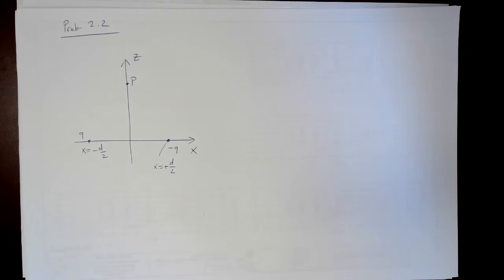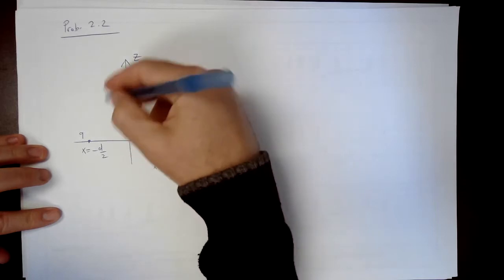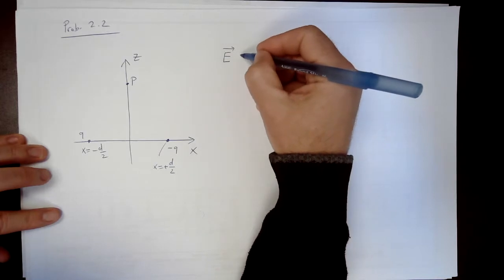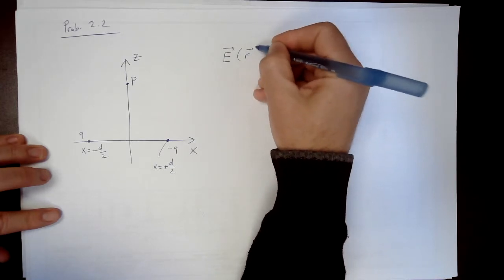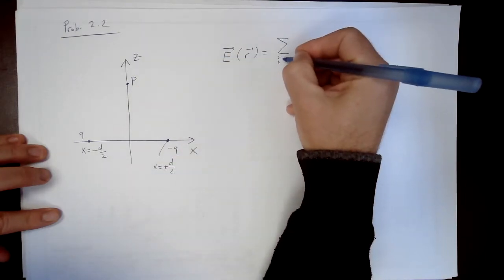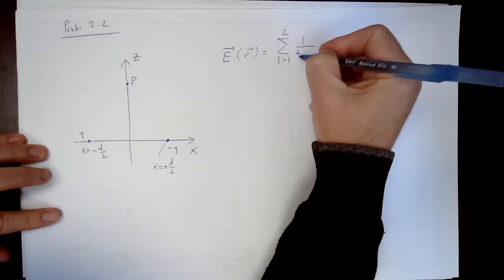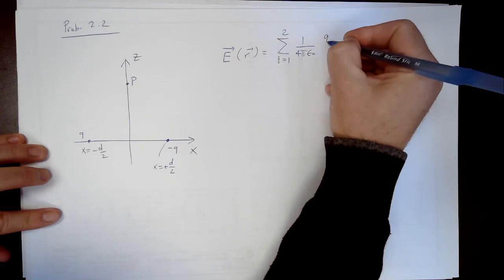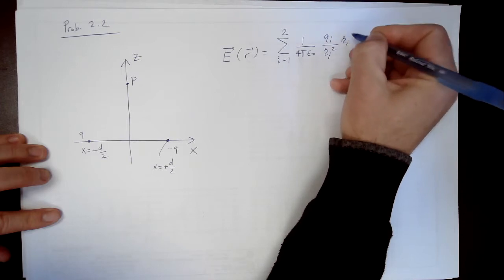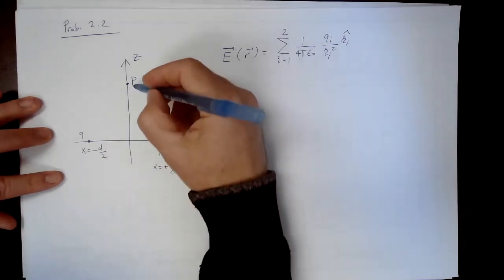So formally, using superposition, what we can write is electric field as a function of position is sum of, in this case there are two charges, i equals 1 to 2.